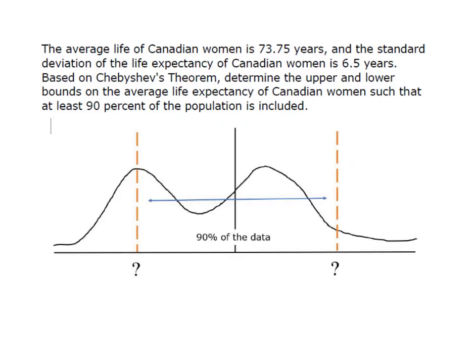So I'm going to use one of my favorite questions, which is the life expectancy of Canadian women. The average life of a Canadian woman is 73.75 years. So down here on my curve, I know that my mean is 73.75 years. I was also told that the standard deviation of the life expectancy is 6.5 years. So I have a sigma or standard deviation of 6.5 years.